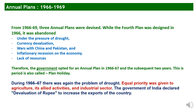There were three Annual Plans from 1966 to 1969. The Fourth Five-Year Plan was designed in 1966 but was abandoned due to pressure of drought, currency devaluation, wars with China and Pakistan, inflation, recession in the economy, and lack of resources. Therefore the government opted for annual plans from 1966 to 1969, also called the plan holiday period. During 1966–67, there was again the problem of drought. Equal priority was given to agriculture, its allied activities, and the industrial sector. The Government of India declared devaluation of the rupee to increase exports.